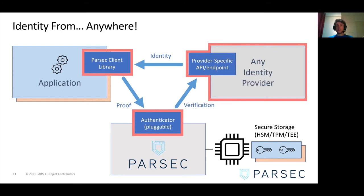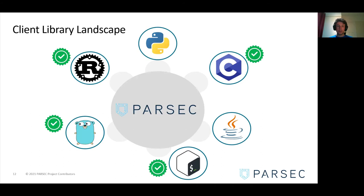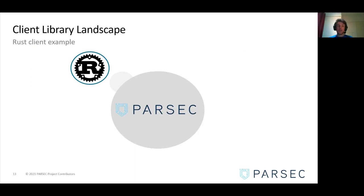To use Parsec, you need a client library written in the language you want. Currently, we have support for a Rust client library, a Go client library, a C client library made possible through Embedded Crypto, and we also have a CLI tool to access Parsec. Each of those is a way for your workloads to access the Parsec service. Let's see how an actual example of the Rust client library looks.